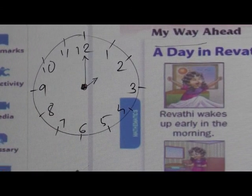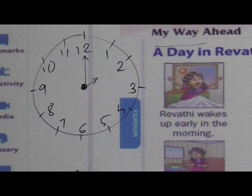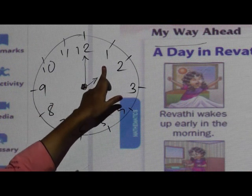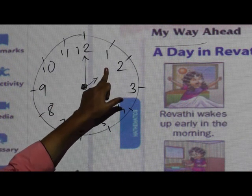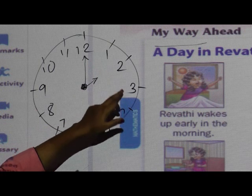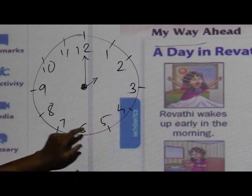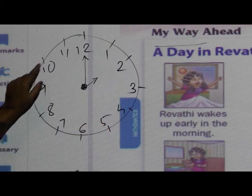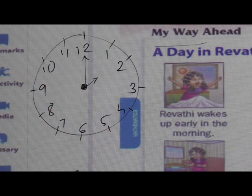The numbers on the clock start from 1 and go till 12. Jaise ki maine abhi bataya — jab minute hand 12 pe ho aur short hand ya phir hour hand kisi bhi number pe ho, to wo exactly utne hours batata hai.